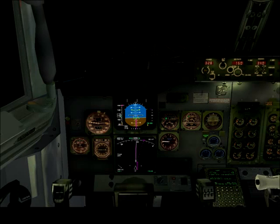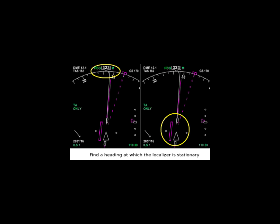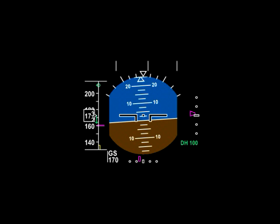What do I mean by neutral pitch angle? It is the pitch angle at which, assuming constant approach speed, the glide slope indicator is stationary. The same applies to heading — at the neutral heading the localizer indicator is stationary. You have to realize that all corrections to pitch angle or heading must always be made in reference to those neutral positions.